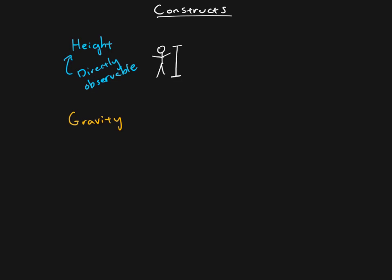We know that there is something that makes objects fall to the ground and you think, oh, that's gravity. We can directly see gravity, but we can't directly see it.